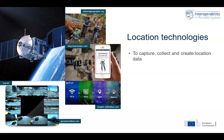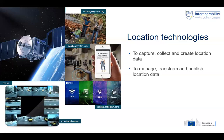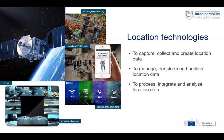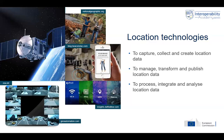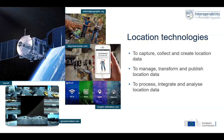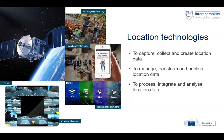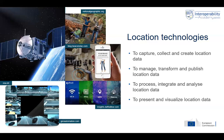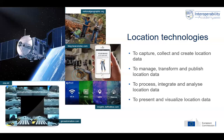First, you need technologies to capture, collect, and create data. Then you need to manage, transform, and publish location data — that's another set of functionalities. You might also need to process, integrate, and analyze location data — this is really the power of location technologies, not just managing and collecting but also analyzing data. The fourth major type of functionality is to present and visualize location data, since location data are typically represented in ways beyond just tabular form.